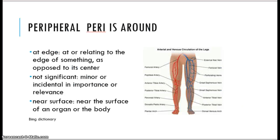Peripheral means an extremity. Usually we start a peripheral IV to the arms or hand. Peripheral actually means near the surface. It can mean periphery, at the edge, or it can mean non-significant, something of unimportance.